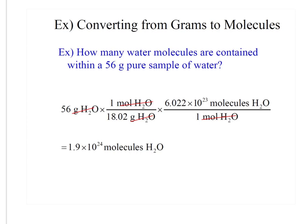Converting from grams to molecules. So how many water molecules are contained within a 56 gram pure sample of water molecules? So I start with what they give me, 56 grams. If I have grams, I need molar mass to go from grams to moles, and then I can use Avogadro's number to go from moles to molecules. Multiply across the top, divide by what's on the bottom, I started with two sig figs, so I need two sig figs in my answer.